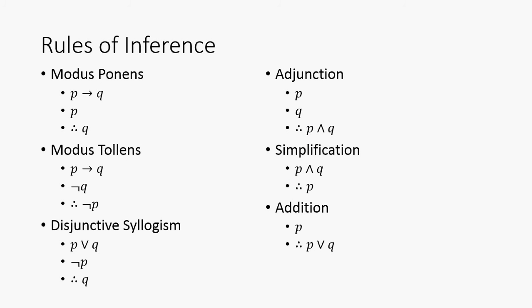Here are some of the rules of inference. One of the biggest ones that we'll use is modus ponens. That would be P implies Q, P, therefore Q. Another big one is modus tollens: P implies Q, not Q, therefore not P.